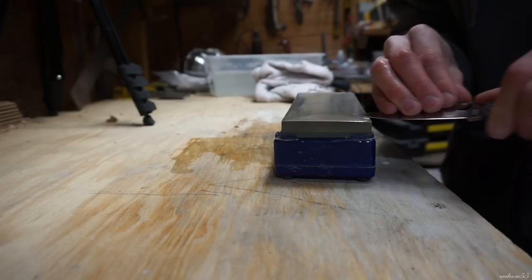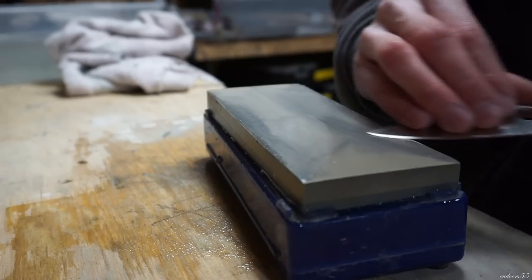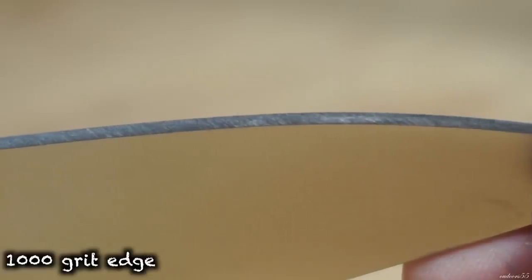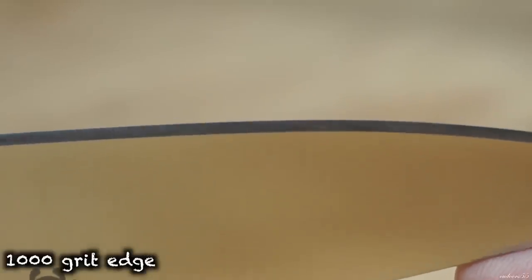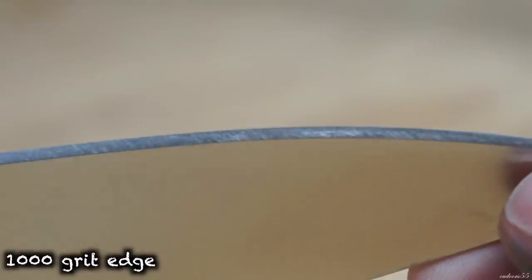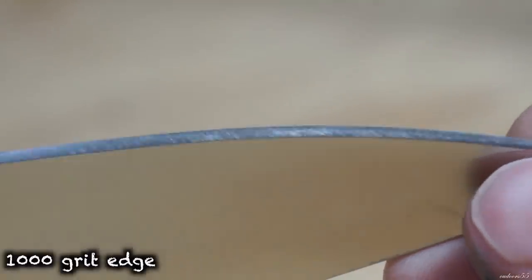Now moving on to my 1000 grit Norton stone. I continue working the edge until all the scratches from the previous 800 grit stone were removed. And here's what the edge looks like off of a 1000 grit Norton stone. Now know that there still is a burr on this edge that I can feel with my finger, but it's just not showing up on camera.